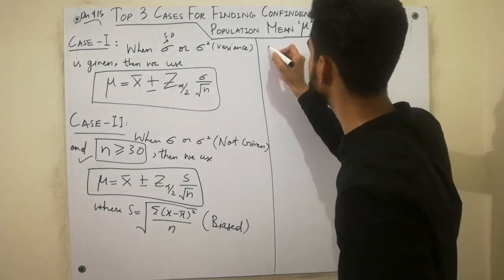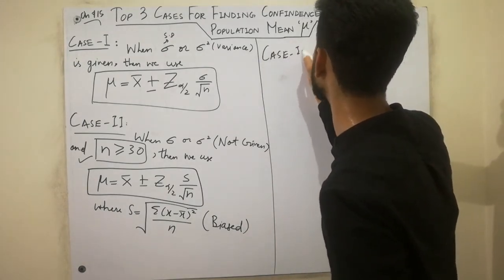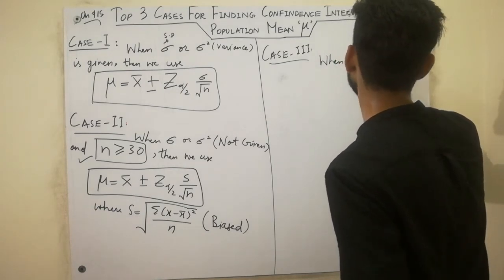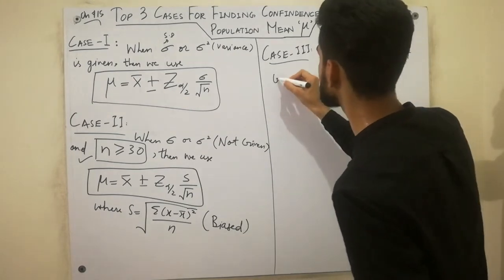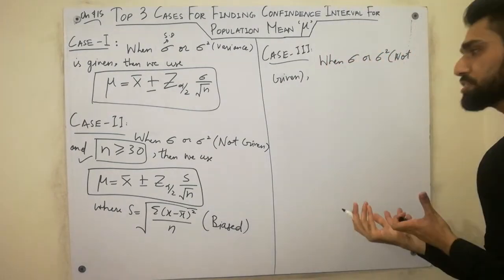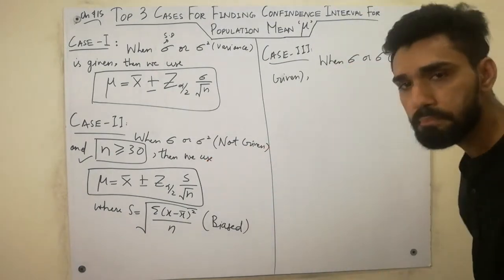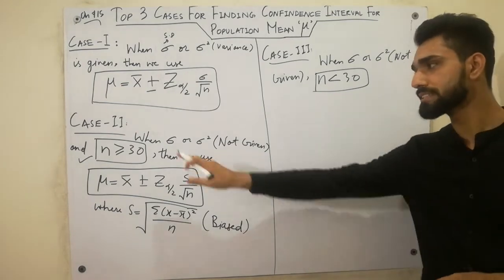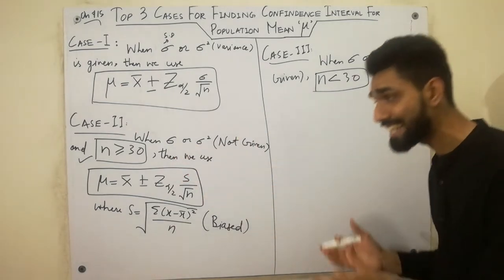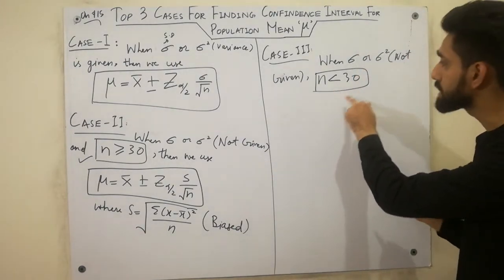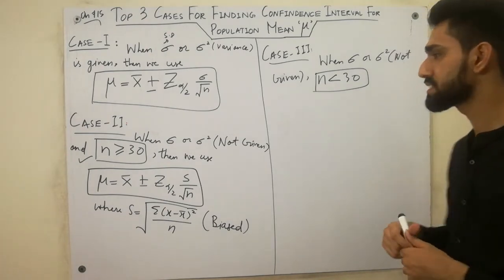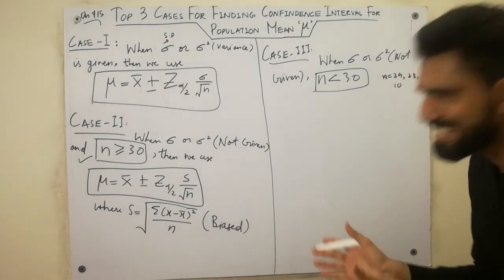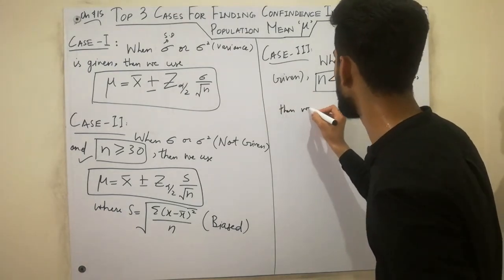The third case is the last and very important case. When Sigma or Sigma squared is not given AND the sample size n is less than 30 — for example n equals 29, 28, down to 10 — this is the third case. If sample size is greater than or equal to 30, use the previous formula, but if sample size is less than 30, then we use the last formula.